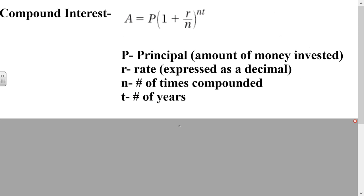The last thing we have to talk about is compound interest — a formula that's used a lot. P is your principal, the amount of money you invest. R is your rate, expressed as a decimal. N is the number of times it's compounded per year: quarterly is 4 times, daily is 365 times, monthly is 12 times. And T is the number of years.